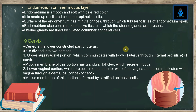The endometrium or inner mucous layer is smooth and soft with a pale red color. It is made up of ciliated columnar epithelial cells. The surface of the endometrium has minute orifices through which tubular follicles open. The endometrium also contains connective tissue in which uterine glands are present, and these uterine glands are lined by ciliated columnar epithelial cells.